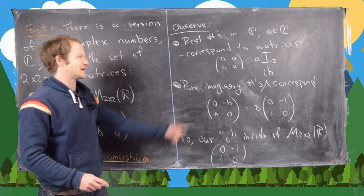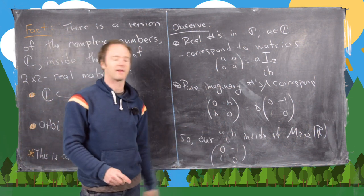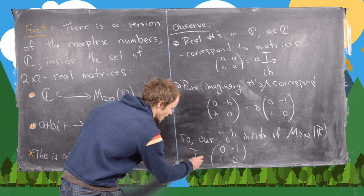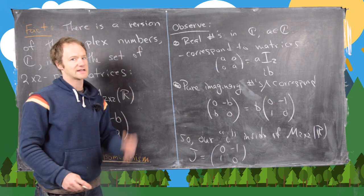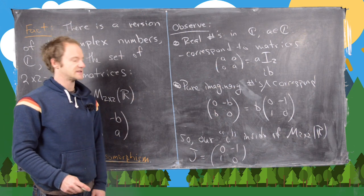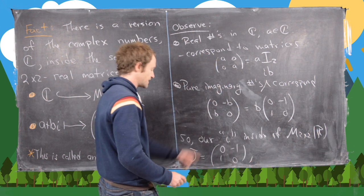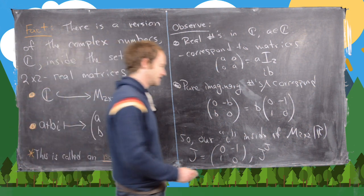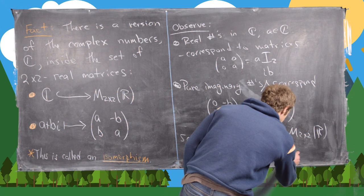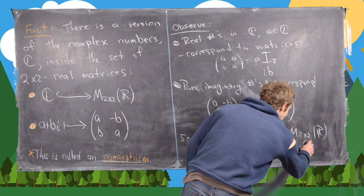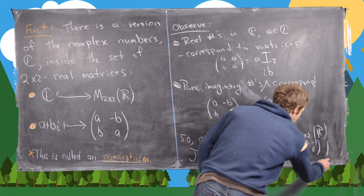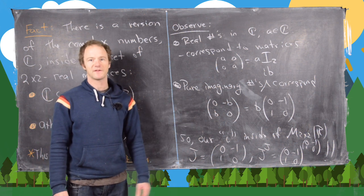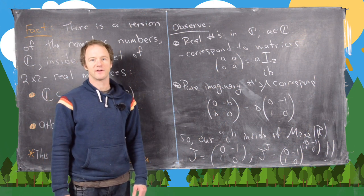We don't want to call that I because that's often used for the identity matrix, and we don't want to call it little i because that's inside the actual complex numbers. So we'll call this thing J. Our goal is to find i to the i using this matrix representation — that means we want to find J to the J, a matrix to the power of another matrix.